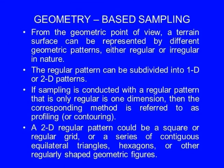Let us look at geometry-based sampling approaches. From the geometric point of view, a terrain surface can be represented by different geometric patterns, either regular or irregular in nature. The regular pattern can be subdivided into 1D or 2D patterns. If sampling is conducted in a pattern regular in only one dimension, the corresponding method is referred to as profiling or contouring. A 2D regular pattern could be a square or regular grid, or a series of contiguous equilateral triangles, hexagons, or other regularly shaped geometric figures.